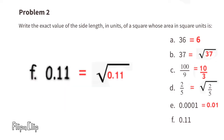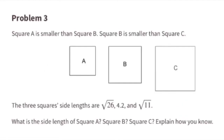Part F: if the area of a square is 11 hundredths, each side length would be the square root of 11 hundredths.